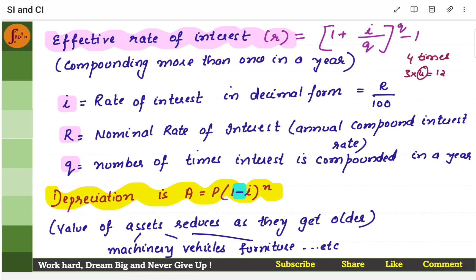Effective rate of interest and nominal rate of interest: nominal rate of interest is the rate of interest for the entire year — annual compound interest rate. Since compounding happens multiple times, the rate of interest would be bigger than the nominal rate. If you compound only once in a year, that rate is called nominal rate of interest. If you compound multiple times, that rate is called effective rate of interest. Effective rate of interest generally will be more than the nominal rate.